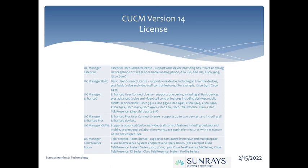The second license type is UC Manager Basic. These are basic licenses required for some calling features, such as those needed on a Cisco 6911 or 6921 phone. Enhanced licenses support video calling as well as desktop use. Enhanced licenses are required for specific phone series like the 7900, 1800, and 1900 series.